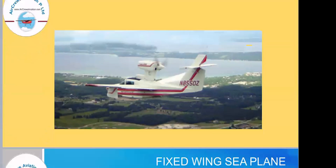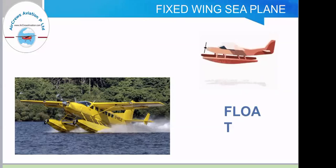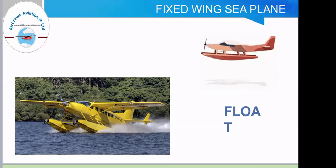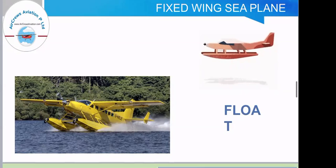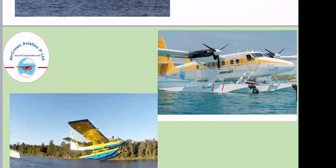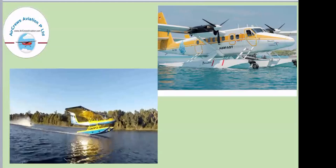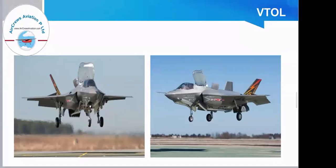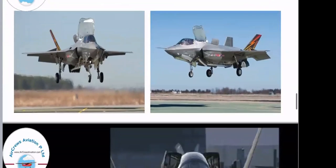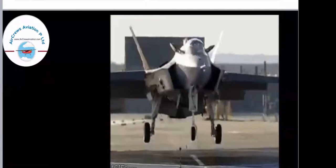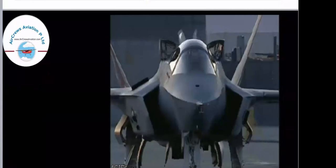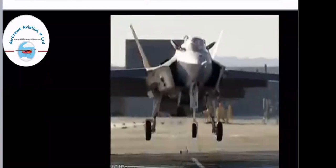In respect to the wing seaplane, that is a float-type aircraft, these aircraft are majorly used for landing on water. Here we can clearly see how it is used to take off and land from water. The next type is VTOL, which means vertical takeoff and landing. Here we can see images of fighter aircraft whose major specification is vertical takeoff and landing, and there is a video showing how an aircraft can vertically take off and land.